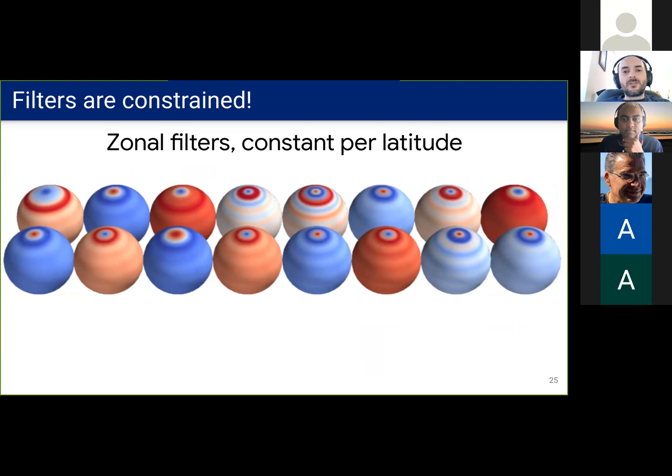In the spatial domain, this constraint corresponds to zonal spherical functions. These are constant at each latitude and result in isotropic filters, which have limited expressivity.